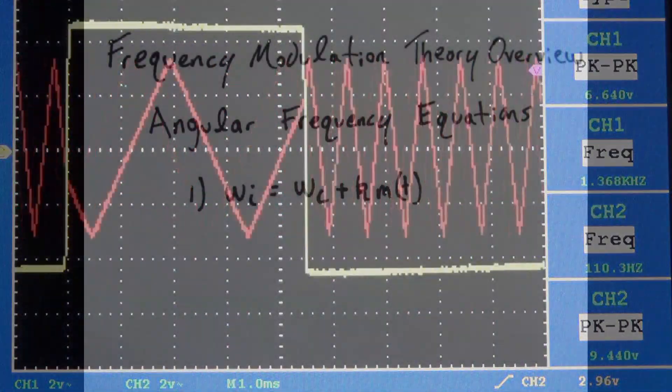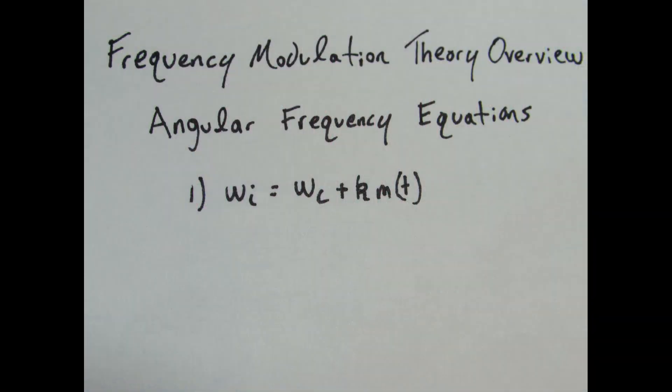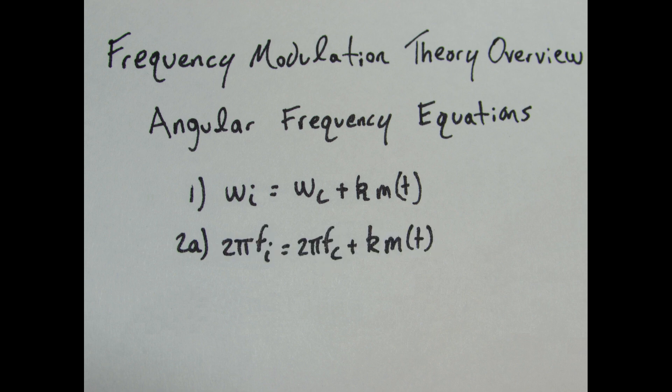You'll typically see these angular frequency equations written in terms of frequency. The angular frequency equals 2pi times the frequency. I'll include the frequency equations in 2a and 2b.